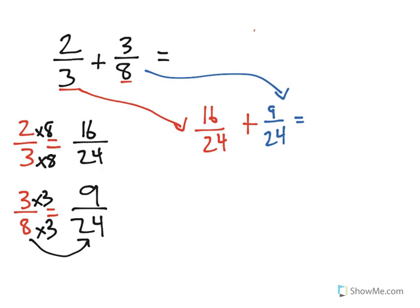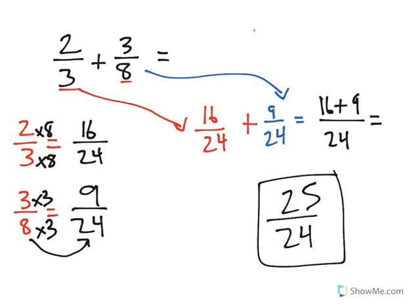And now I could add the two because my denominators are the same. 16 plus 9, I add the numerators, the denominator remains. 16 plus 9 is 25, and 24 stays our denominator.